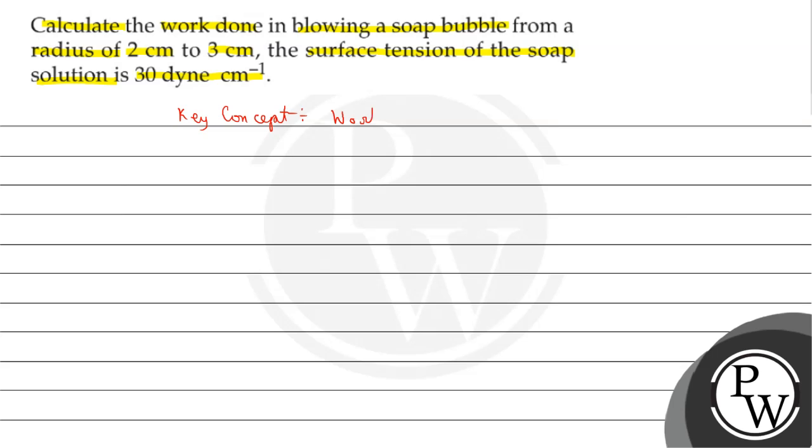Work done due to surface tension. The relation between work done and surface tension is given by the formula: W equals sigma multiplied by increase in surface area.